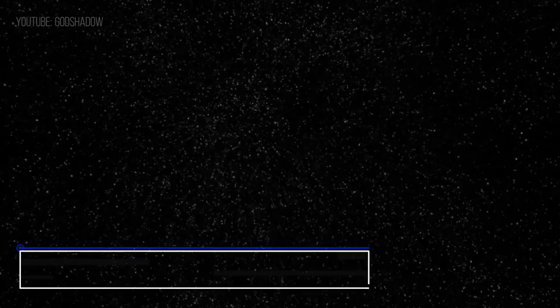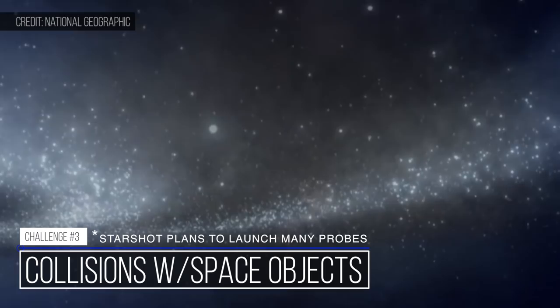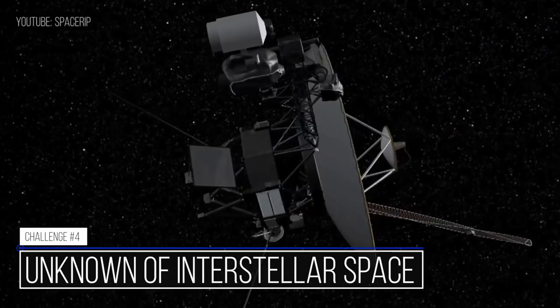The interstellar medium is the vast unknown. The first and only man-made object to reach interstellar space is the Voyager 1 probe, launched in 1977. It took the iconic pale blue dot image of planet Earth in 1990 and crossed the heliosphere in 2012 and is still active.